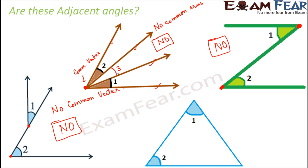For the fourth example — are angle 1 and angle 2 adjacent angles? Not again. Here, the vertex of this angle is here and the vertex of this angle is here, so they do not have a common vertex. Therefore these are not adjacent angles either.